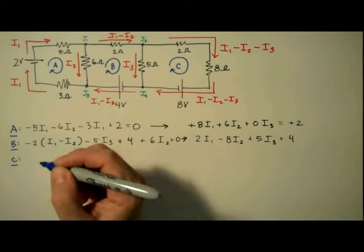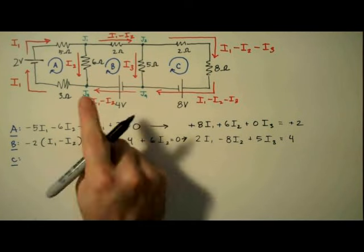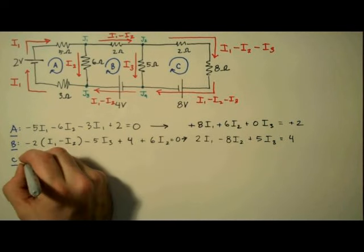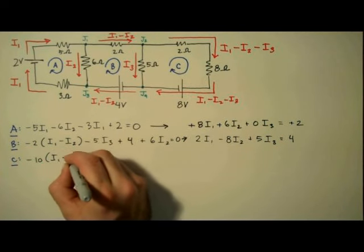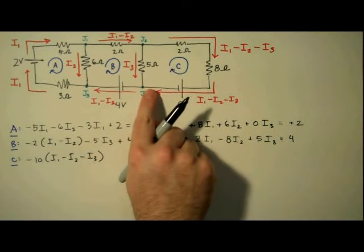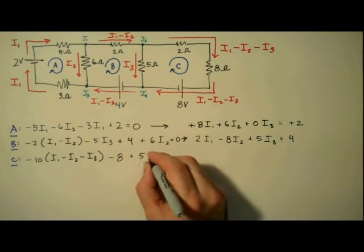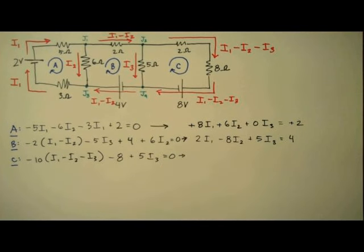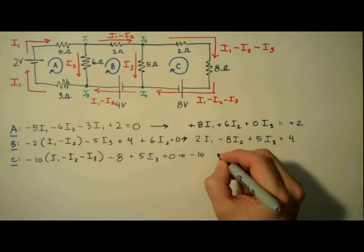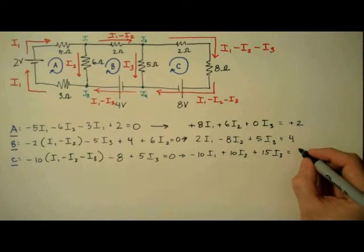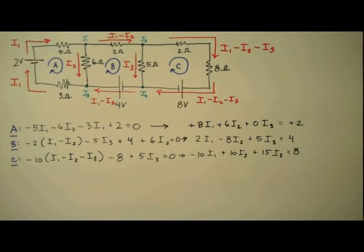Now we apply the loop rule to loop C. And the 2 ohm and 8 ohm resistor, I'm going to combine as a 10 ohm resistor. So we get minus 10 times I1 minus I2 minus I3, minus 8, plus 5I3, equals 0. We'll distribute and combine like terms, and this equation simplifies to negative 10I1, plus 10I2, plus 15I3, equals 8. Wonderful. We have three equations and three unknowns.